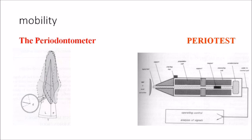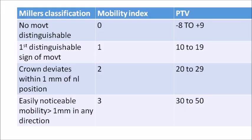To detect mobility conventionally, we place an instrument or fingers opposite the tooth along the buccal and palatal aspects and apply force. To objectively measure mobility, we have the Periodontometer, which detects mobility of natural teeth. Periotest is an instrument that can detect the mobility of both natural teeth and implants. The readings from Periotest correspond to Miller's mobility classification. Miller's index 0 — no movement distinguishable — corresponds to a Periotest value of −8 to +9.